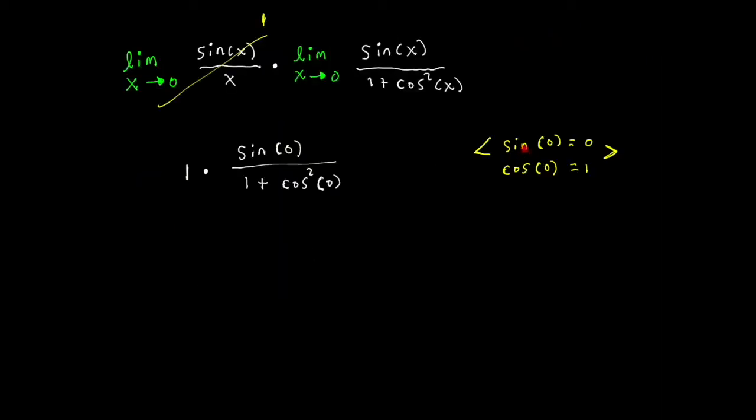And from our trig course, we know that sine of 0 equals 0, cosine of 0 equals 1. Applying these substitutions or results, we get 1 times 0 over 1 plus 1 squared. And this is basically game over because we have 0 on the numerator, meaning that the whole thing is going to reduce to 0. So we have 1 times 0 and that equals 0.